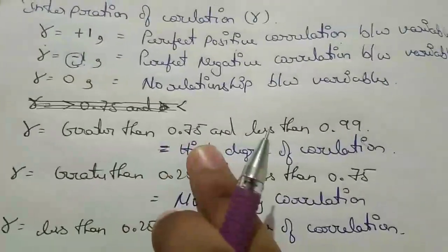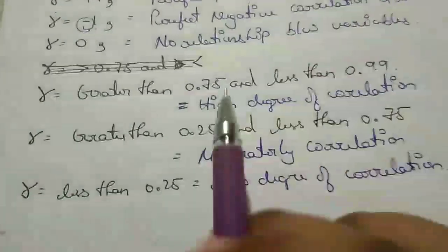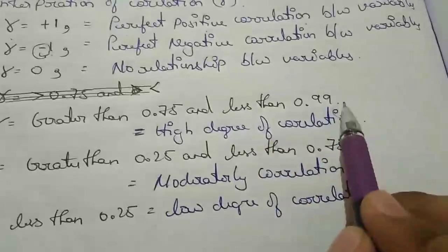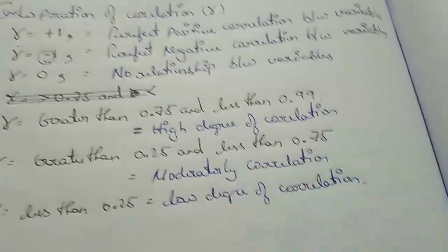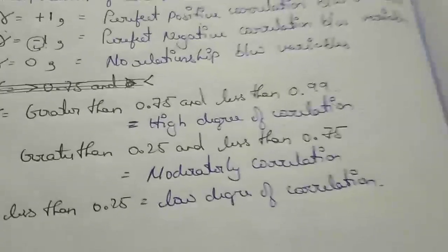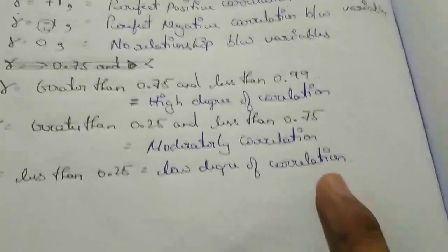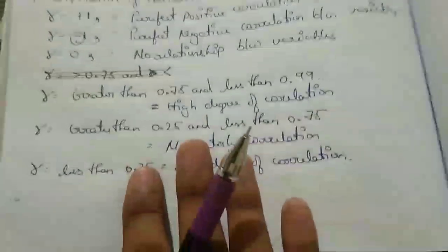If r is between 0 and some value — mainly this third case actually occurs in your answers. When r is greater than 0.75 (like 0.999 or 0.5) and less than 0.99, it is a high degree of correlation. From 0.25 to 0.75 it is moderate or medium degree of correlation. Less than 0.25 (like 0.1 or 0.11) it is a low degree of correlation. You have to specify this after your sum — I will show you how.